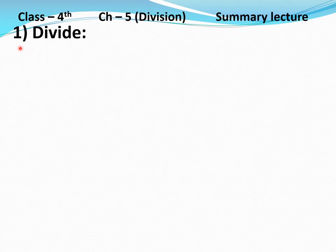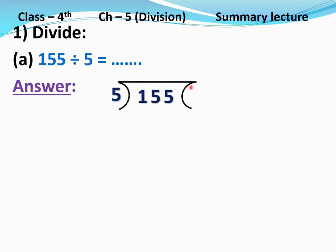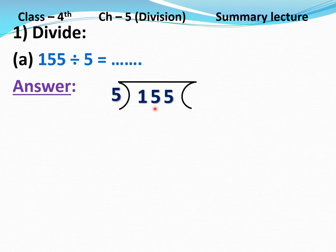Now question number 1, part A: 155 divided by 5 equals dash. See, 155 is the dividend and 5 is the divisor. Make a sign, write 5 here and write 155 here. Since 5 is a one-digit divisor, we take only the first digit of the dividend, that is 1. But 1 is less than 5, so we take one more digit, that is 5. Number formed is 15. Now multiply 5 by that number so that it is equal to 15 or less than 15.